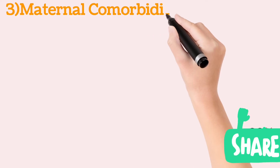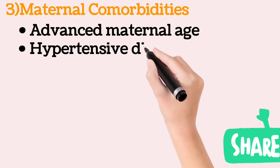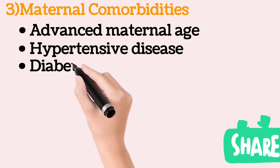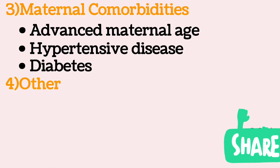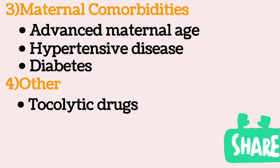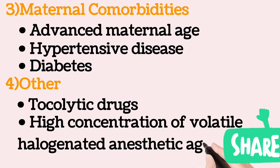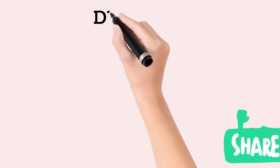Maternal comorbidities include advanced age, hypertensive disease, and diabetes mellitus. Some other causes associated with uterine atony are tocolytic drugs and the use of high concentrations of volatile halogenated anaesthetics.